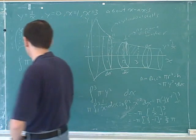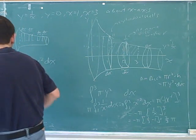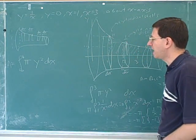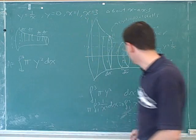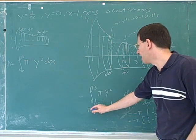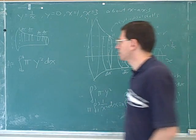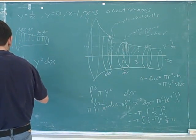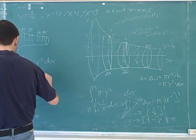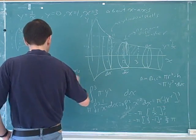So this is the cookbook formula for finding this area. It's pi times y squared from a to b. You can see that's the formula that we used here, pi and y was 1 over x. So this is the formula when we're using the disk method around the x-axis.